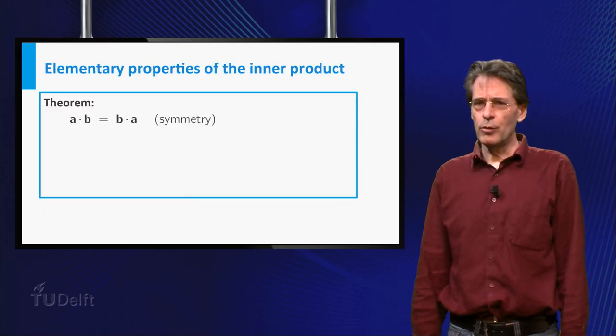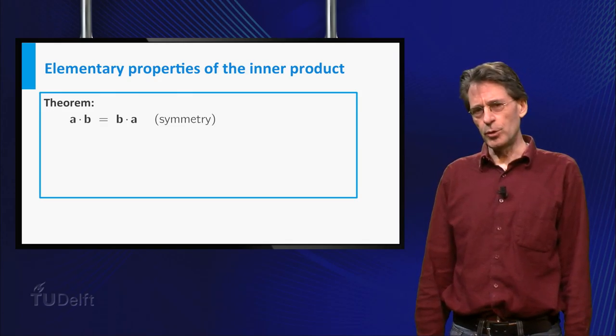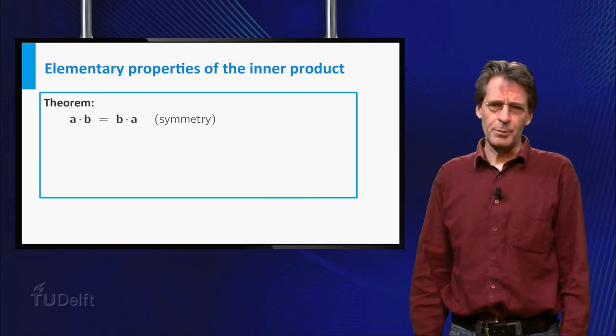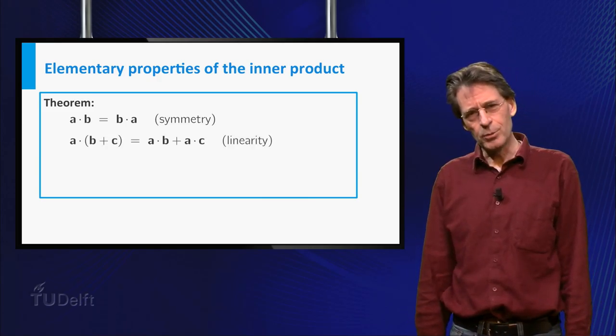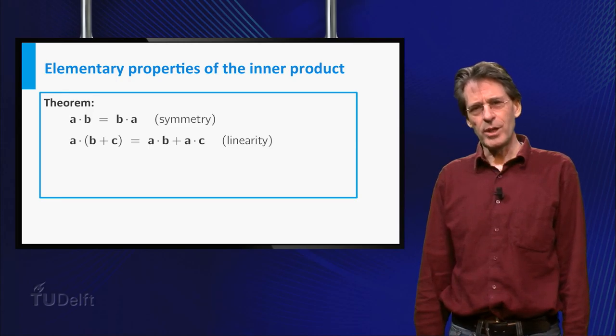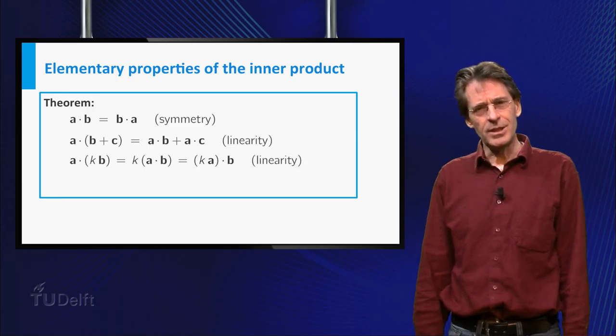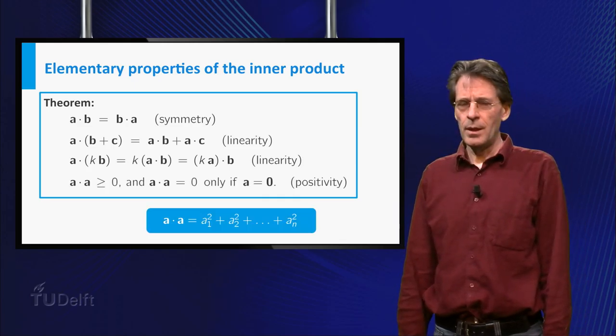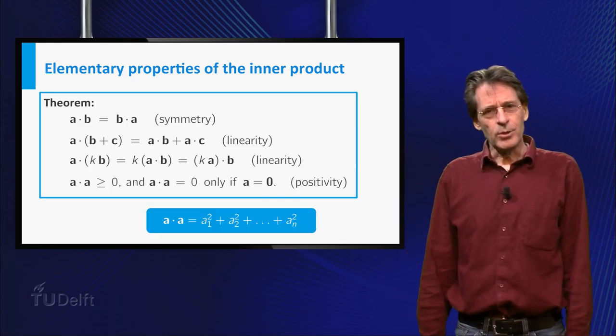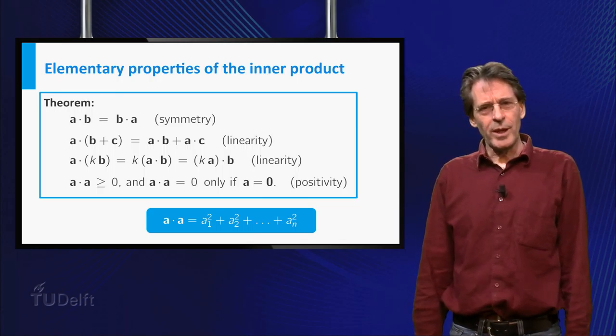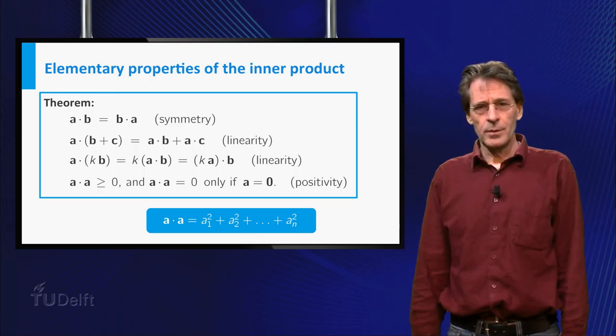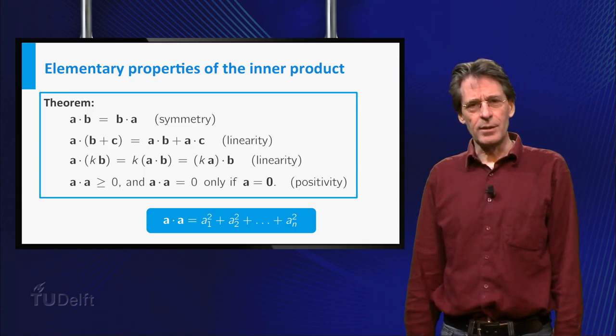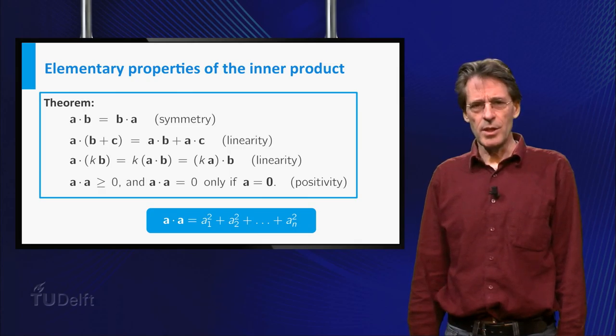From this definition, the following rules are easily deduced. a dot b equals b dot a, which is called symmetry, a dot (b plus c) equals a dot b plus a dot c, and a scalar k can be taken out of the inner product. Lastly, a dot a equals a1 squared plus a2 squared up to an squared, a sum of squares. So a dot a is always non-negative and it only equals zero if a is the zero vector.